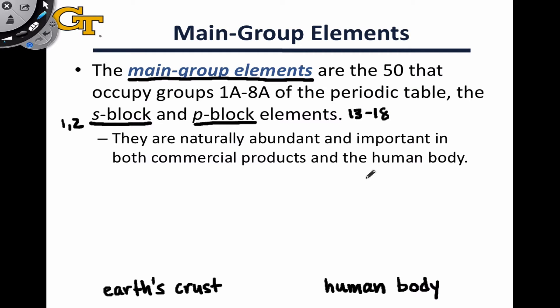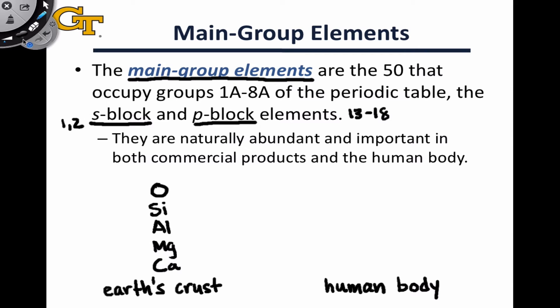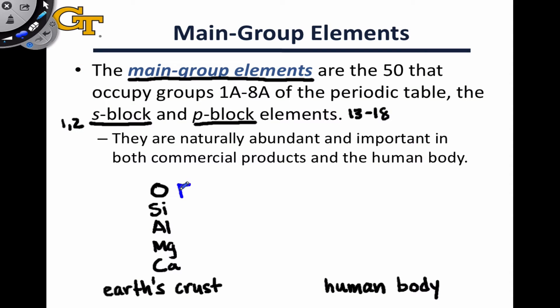The main group elements are naturally abundant and super important in both commercial products and the human body. Among elements in the Earth's crust, main group elements that we find a lot of include oxygen, silicon, aluminum, magnesium, and calcium, and really only one transition metal is common in the Earth's crust, and that's iron.